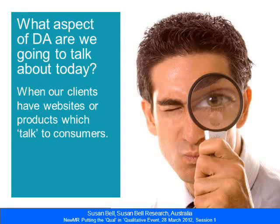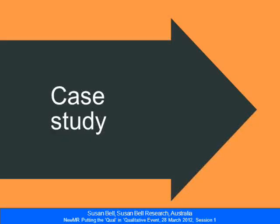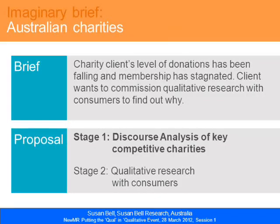To explain what that's all about, I'll go through a case study. What I did was create an imaginary brief modelled on previous work we've done, which was of course confidential, but the basic procedure was common to how we would normally conduct it. The imaginary brief was about Australian charities — we effectively pretended that we had a charity client whose levels of donations had been falling and their membership had stagnated, a fairly typical core research project. The client wanted to commission core research to find out why and what was happening.